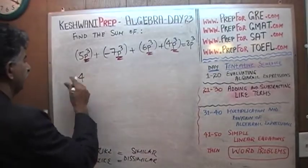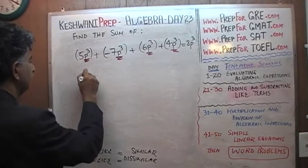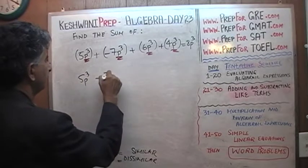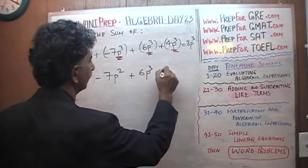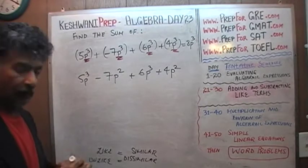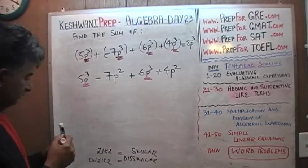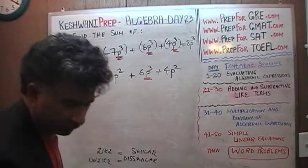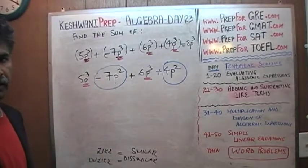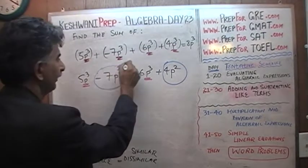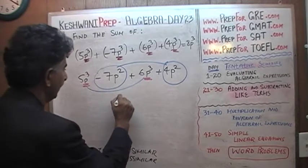Now what would have happened if we had something like this: 5p cubed plus 5p cubed minus 7p squared plus 6p cubed plus 4p squared? Now they are not all like terms. 5p cubed and 6p cubed are like terms, but the p squared terms are going to be added up separately. So we add the p cubed terms together: 6 plus 5 gives us 11p cubed.